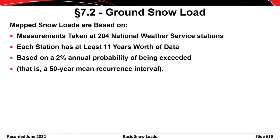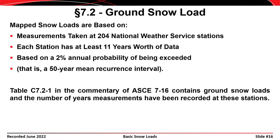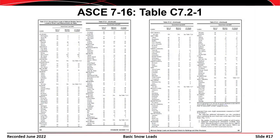The ground snow load map was developed using measurements at 204 National Weather Service stations, each with at least 11 years of data. The data is based on a 2% probability of exceedance each year, which correlates to a 50-year mean recurrence interval. The commentary to ASCE 7 section contains ground snow loads at those 204 stations, and a snapshot of those station records shows different locations, maximum observed snowfalls, and the 2% exceedance snowfall.